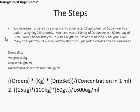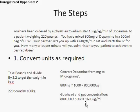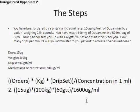Now we take this information and plug it into the formula. Let's review the values we have extracted: the dose is 15 micrograms, the patient's weight is 100 kilograms, the drip set is 60 drops per milliliter, and our concentration is 1,600 micrograms per milliliter. The formula is: doctor's orders multiplied by kilograms, multiplied by the drip set, divided by the concentration in 1 milliliter.